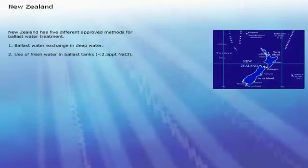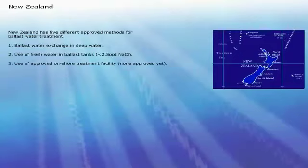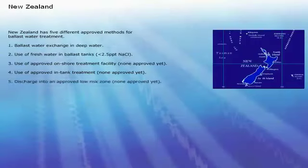New Zealand has five different approved methods for ballast water treatment: ballast water exchange in deep water; use of fresh water in ballast tanks at less than 2.5 PPT salinity; use of an approved onshore treatment facility (not yet approved); use of approved in-tank treatment (not yet approved); and discharge into an approved low-risk zone (not yet approved). They also require a special form to be completed.